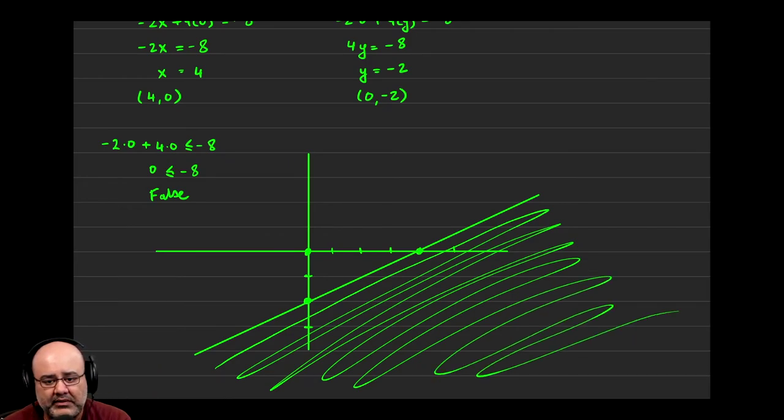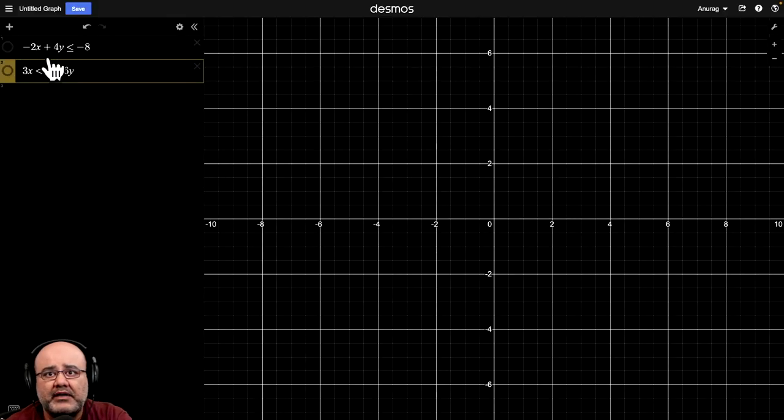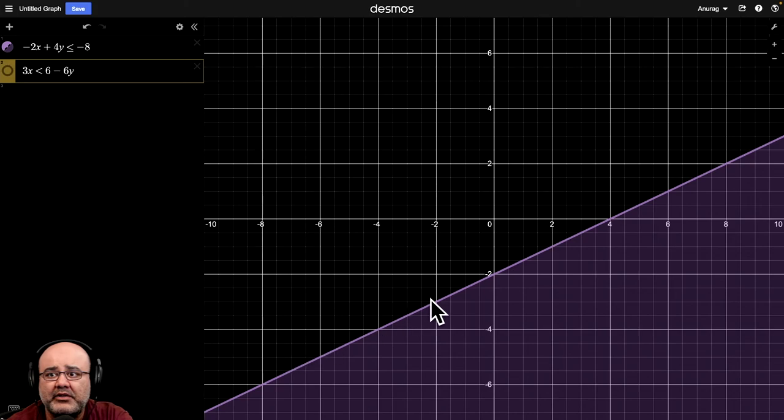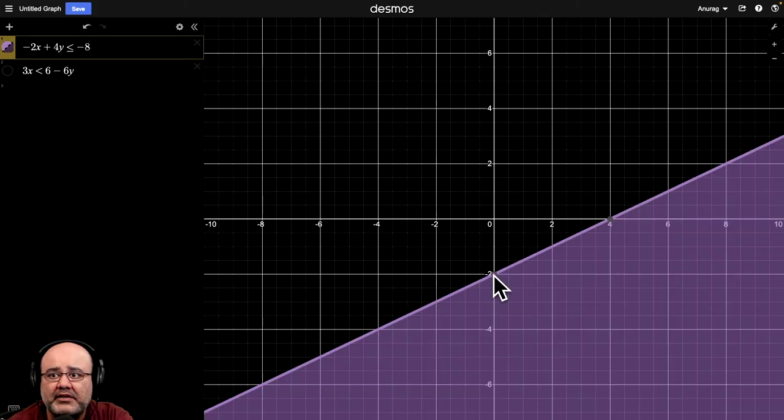Let's look at this in Desmos. So here I have -2x + 4y ≤ -8. So when I turn this line on, you'll notice the y-intercept of (0, -2) and the x-intercept of (4, 0).